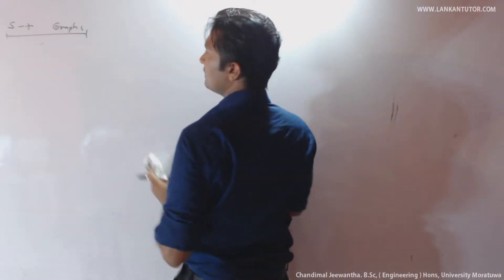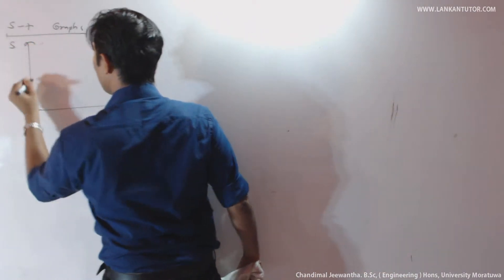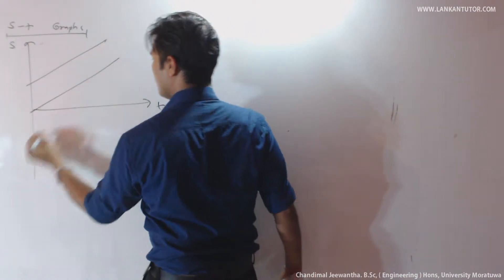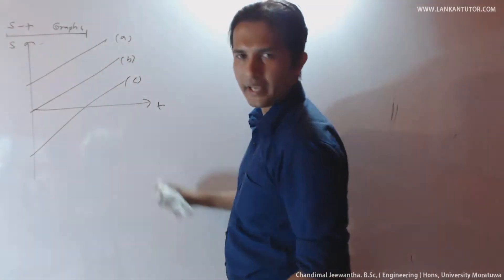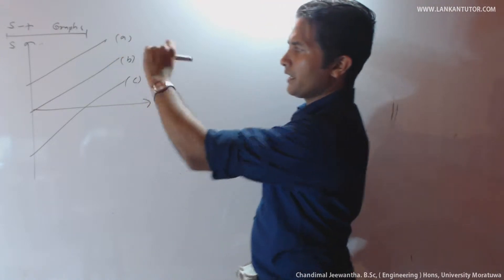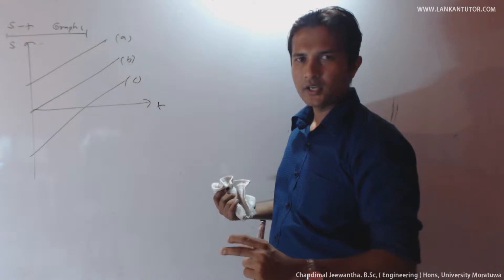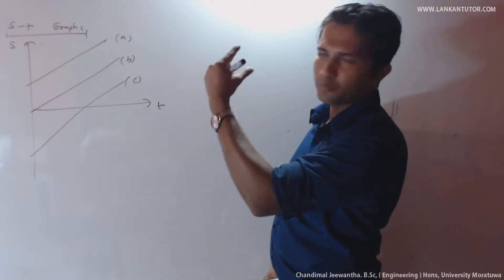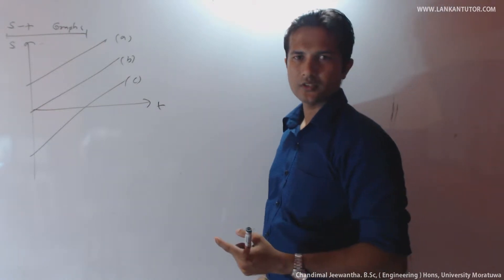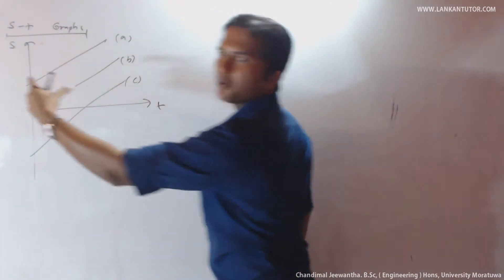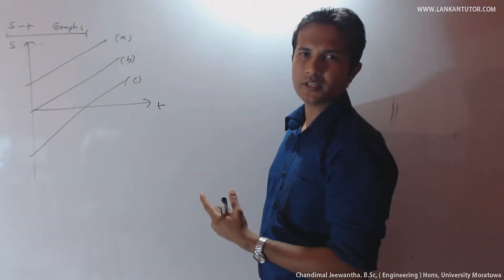Considering simple A: there is an initial positive displacement and the object moves with uniform velocity towards the positive direction. Considering simple B: starts with zero displacement — object goes through the origin towards the positive direction, moving with a uniform velocity.